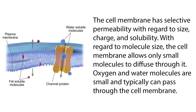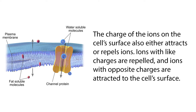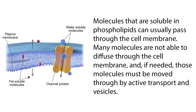Oxygen and water molecules are small and typically can pass through the cell membrane. The charge of the ions on the cell's surface also either attracts or repels ions. Ions with like charges are repelled, and ions with opposite charges are attracted to the cell's surface.